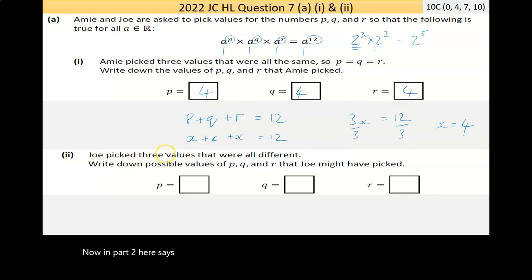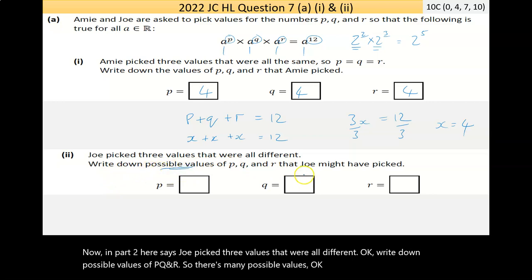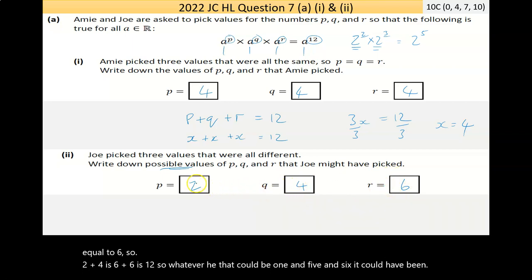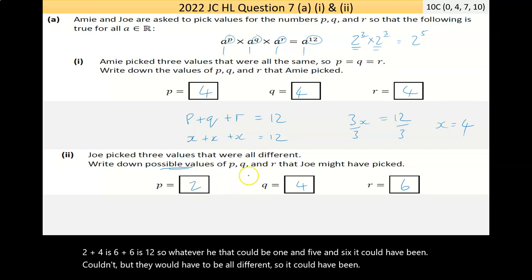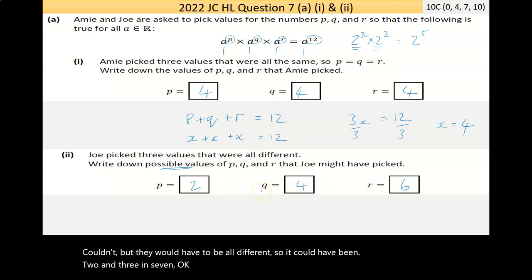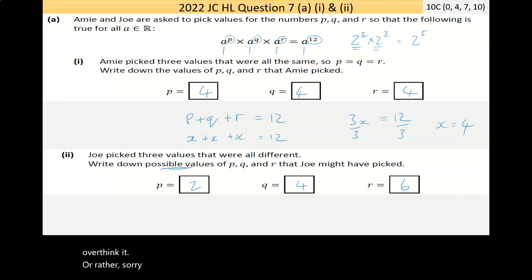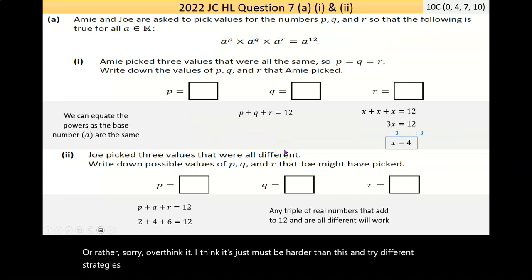Now in part 2 here, it says Joe picked three values that were all different. Write down possible values of P, Q, and R. So there's many possible values. As long as they add to 12, that statement is valid. So I'm going to pick 2 and 4 is 6, and then 12 minus 6 is equal to 6. So 2 plus 4 is 6, plus 6 is 12. That could have been 1 and 5 and 6, or 2 and 3 and 7. We need any numbers, as long as they add to 12 and are different, we'll achieve the marks there. So kind of a challenging question because you might overthink it. That's the answer there.